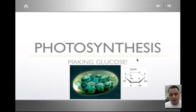So photosynthesis is a process of making glucose and other sugars, and it happens in the chloroplasts.